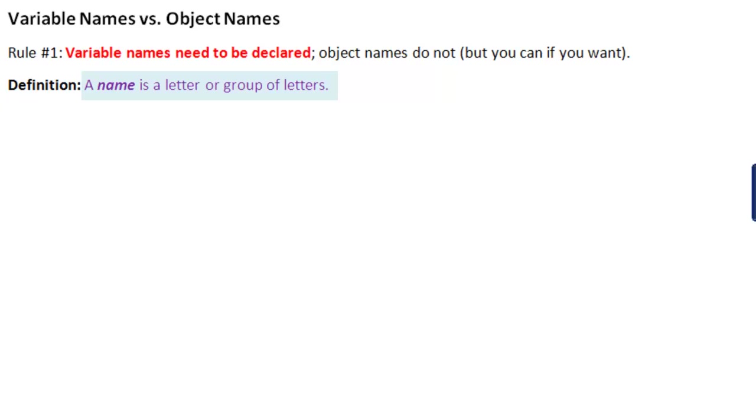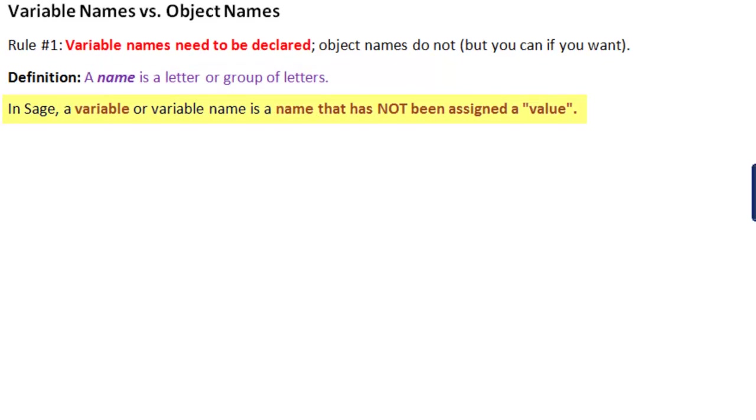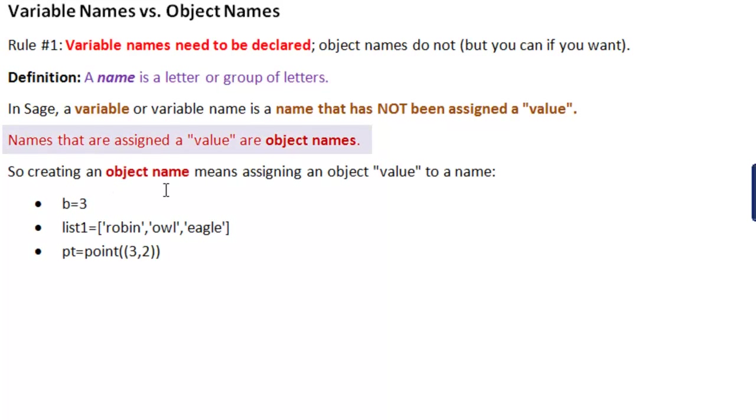A name is a letter or a group of letters. In Sage, a variable or variable name is a name that has not been assigned a value. Names that are assigned a value are object names. Creating an object name means assigning an object value to a name.